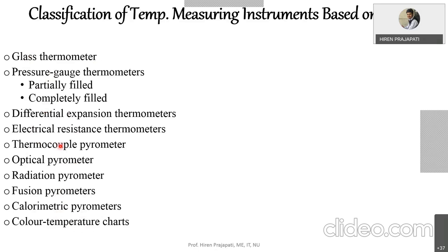Briefly on pyrometers: they are non-contact instruments. When you heat any material, its color changes, so an optical pyrometer works based on the change in color with temperature. A radiation pyrometer works based on radiation emitted from a hot body — every body emits radiation based on its temperature, and the radiation pyrometer measures temperature from that emitted radiation.